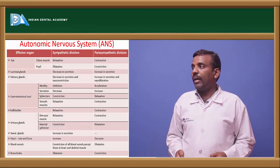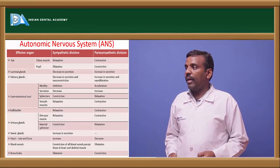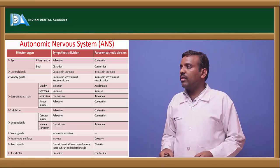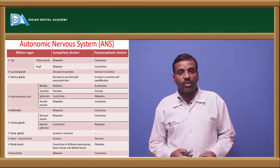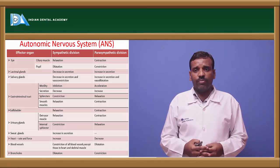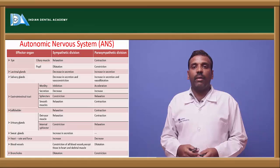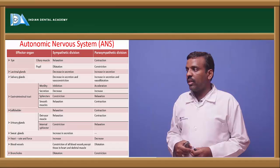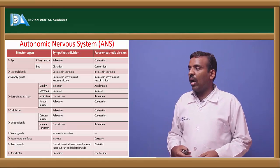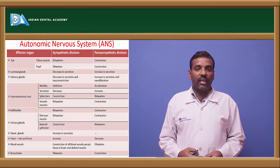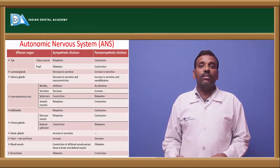Sympathetic versus parasympathetic effects: salivary and lacrimal glands — sympathetic decreases secretion, parasympathetic increases secretion. Gastrointestinal tract — sympathetic causes inhibition of motility and decreases secretion; parasympathetic causes relaxation, acceleration, and increased contractions. Gallbladder — sympathetic causes relaxation, parasympathetic causes contraction. Sweat glands — increased secretion by sympathetic, no parasympathetic action. Heart rate — increased by sympathetic, decreased by parasympathetic.